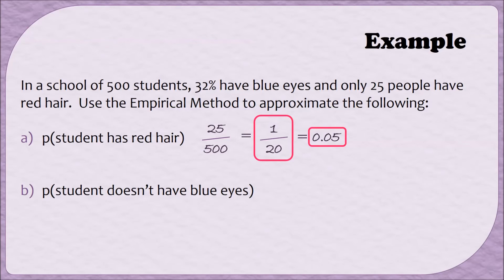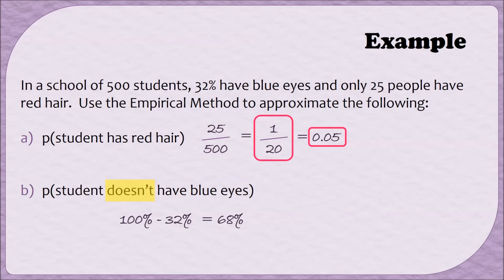Part B is a little bit different—it asks for the probability that a student doesn't have blue eyes. This example is different in two ways. First, we don't know how many students have blue eyes, but we do know that 32 percent of the students have blue eyes. Second, we're interested in the probability that a student doesn't have blue eyes. So instead of using 32, I can subtract that from 100, and that tells me the percent of students who don't have blue eyes. 100 percent minus 32 percent means that 68 percent of the students do not have blue eyes.